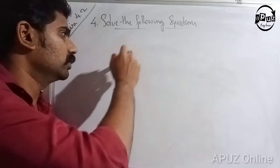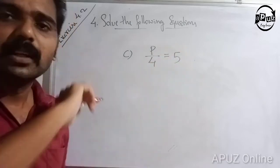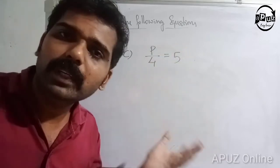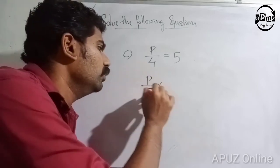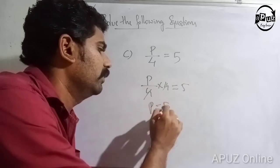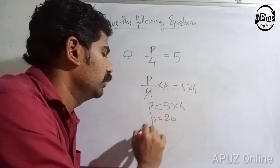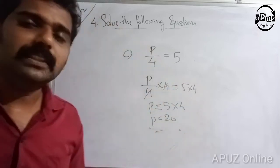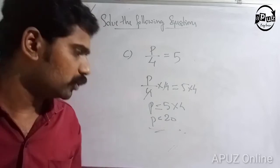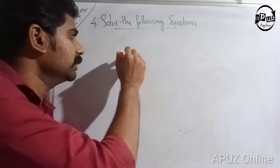Next: p divided by 4 is equal to 5. We multiply both sides by 4: p divided by 4 into 4 is equal to 5 into 4. So p is equal to 20. The answer is p equals 20.